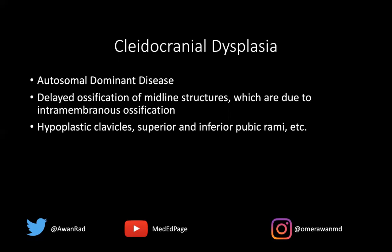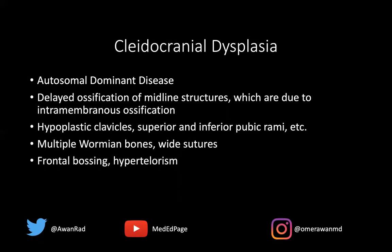Other things that can happen: the superior pubic rami, which are midline structures, can be hypoplastic. You can have Wormian bones, meaning intrasutural bone — bony ossicles in the cranium and intrasutural bone. The sutures themselves become widened. You can get frontal bossing, which is a prominent forehead; hypertelorism, which is eyes that are very widely spaced apart; and a protruding jaw or mandible. All of these are findings typically seen in cleidocranial dysplasia, also called cleidocranial dysostosis — all the same terms for the same pathology. You can often get a narrow thorax, vertebral malformations — again because the spine is a midline structure. So anything involving a midline structure may be involved in cleidocranial dysplasia.